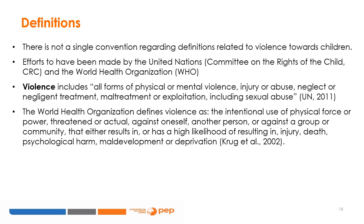The Convention on the Rights of the Child, Article 19, indicates that violence includes all forms of physical or mental violence, injury or abuse, neglect or negligent treatment, maltreatment or exploitation, including sexual abuse. The World Health Organization defines violence as the intentional use of physical force or power, threatened or actual, against oneself, another person, or against a group or community, that either results in or has a high likelihood of resulting in injury, death, psychological harm, maldevelopment, or deprivation.